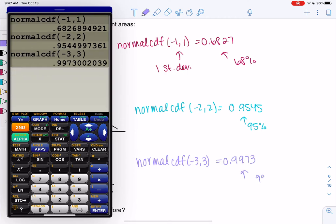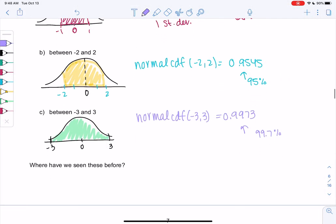And so we've seen these before in the empirical rule. So they're not totally made-up numbers. These are just more exact versions of these answers. All right, let's try another one. I think we're going to go backwards in the next example. So sometimes we know area, and we want to find z-score.